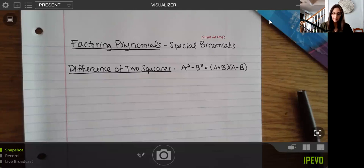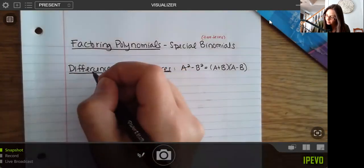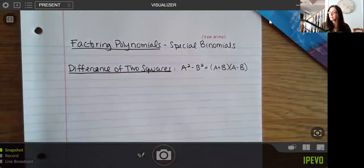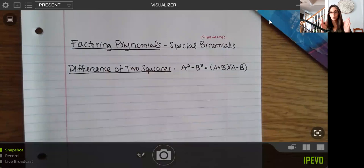The first, which is the most common, is the difference of two squares. So when you have an example, you have a square minus a square.